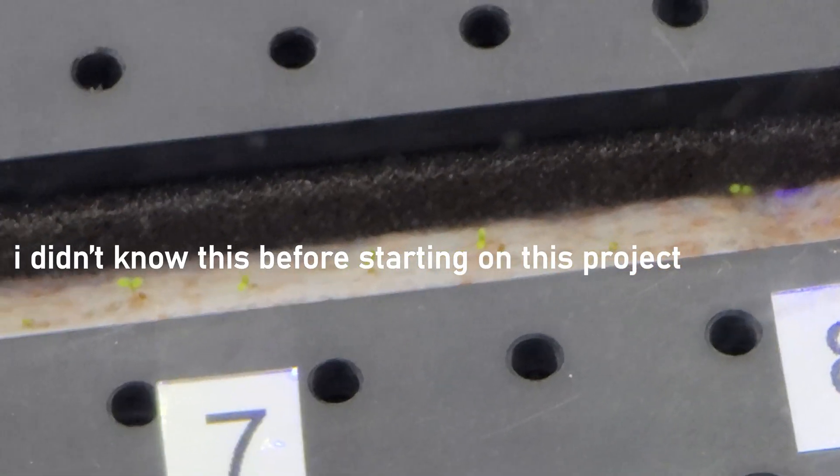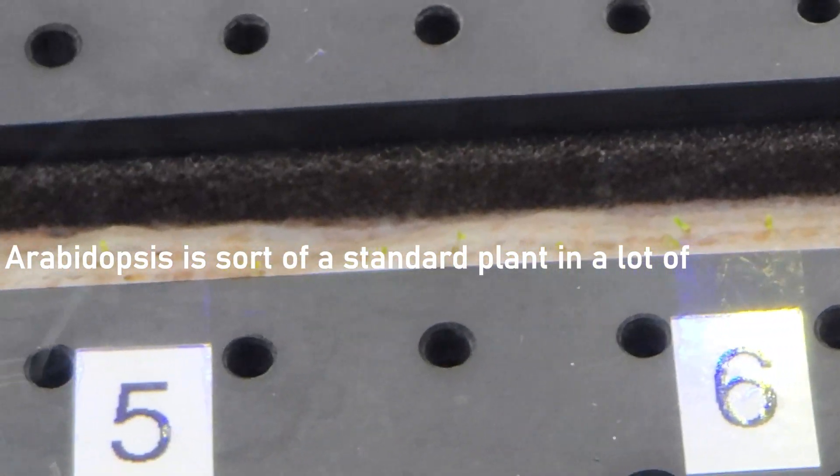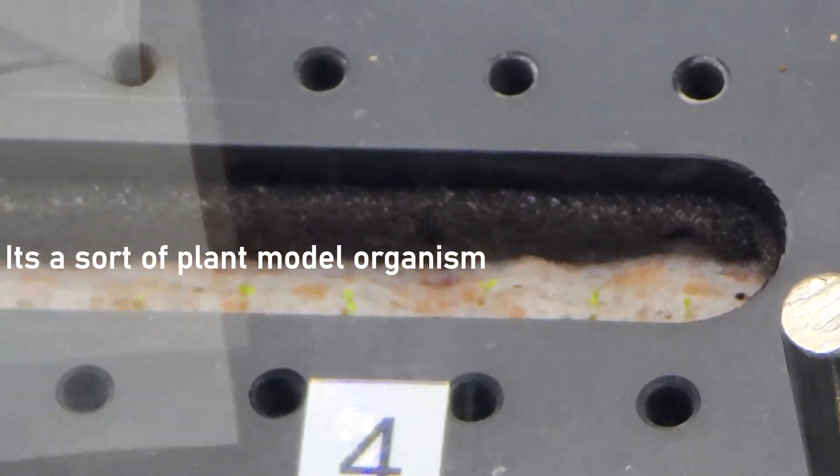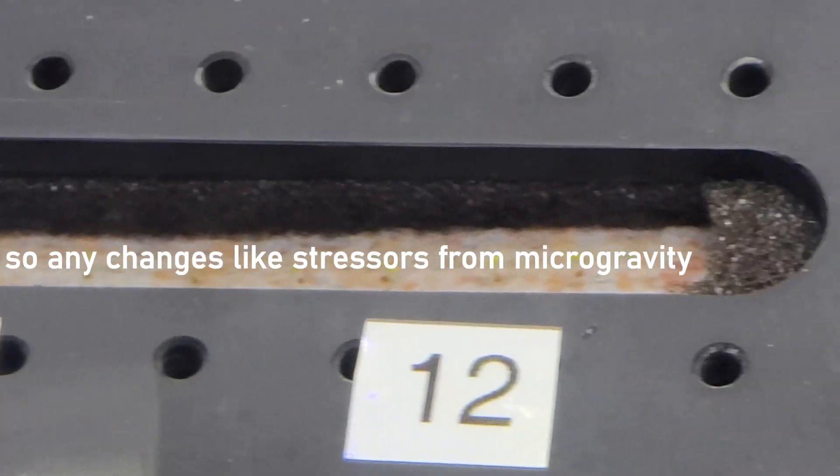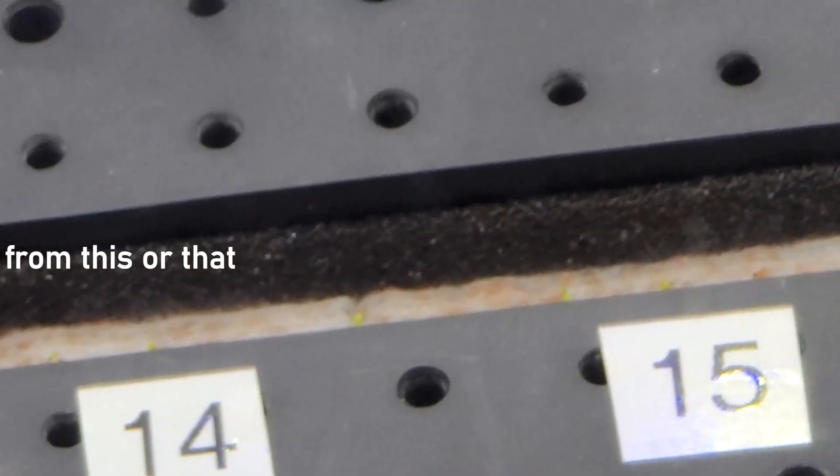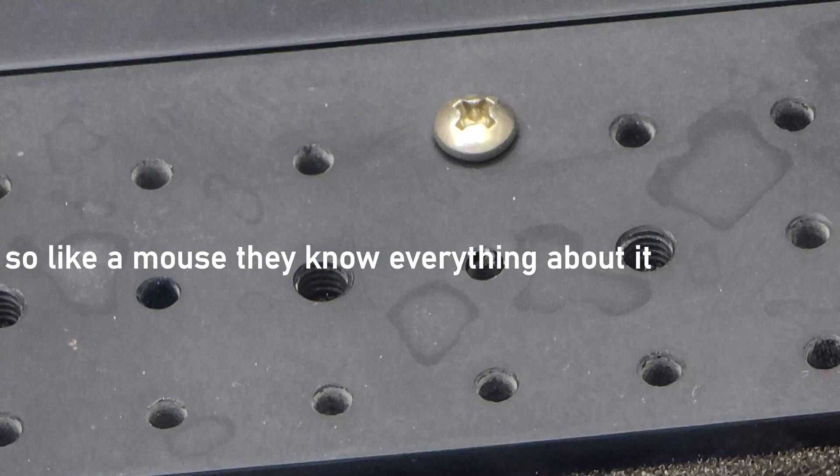Arabidopsis is sort of a standard plant in a lot of genomic research because it's a plant model organism. So they have the genome completely mapped. They know everything about it. So any changes, stressors from microgravity, it's all visible like a mouse. They know everything about it.